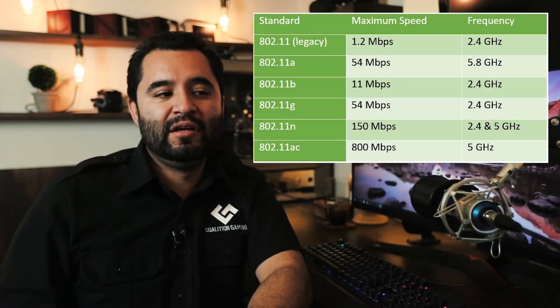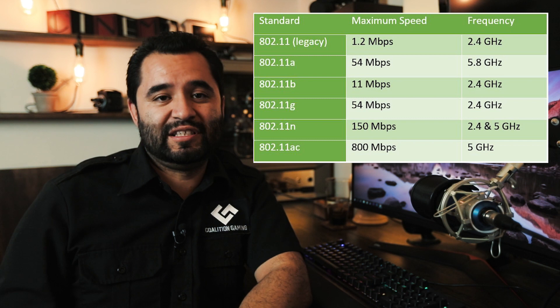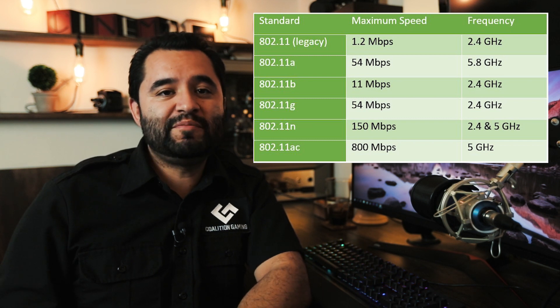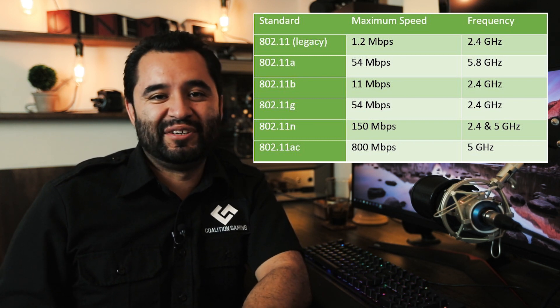Number seven: can I use it over WiFi? OBS NDI technically can be used over WiFi, but unless you have a really good connection — probably a 5GHz wireless AC connection with really good network bandwidth — it's highly recommended that you don't. You want to be wired in with gigabit ethernet cables. WiFi should be a last resort.